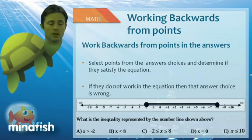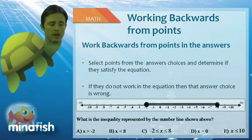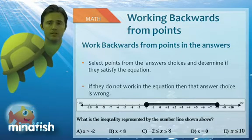3 is a true value on our number line. It should be also true in the equation that we're picking. So it's true in A, it's true in B, it's true in C, but it's not true in D. So now we've eliminated D.